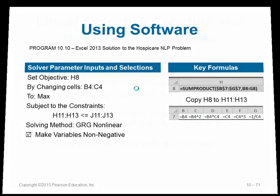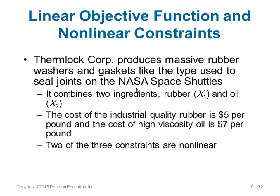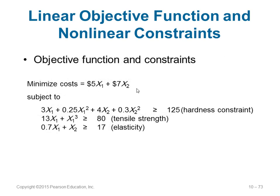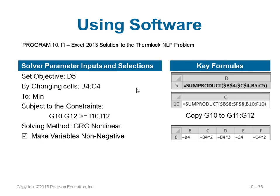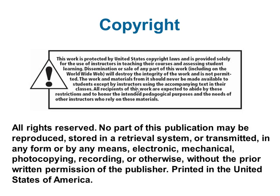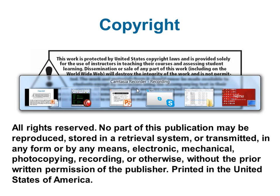Third case: a linear objective function with non-linear constraints. Example: a company producing items using rubber (x1) and oil (x2). The objective function — minimizing cost — is linear, but two of three constraints are non-linear in nature. These are the various types of non-linear programming problems you can encounter in real-world scenarios, and that concludes this chapter.